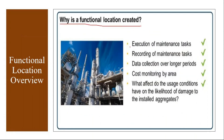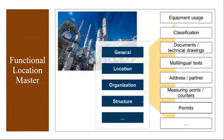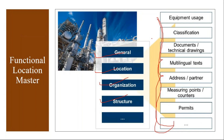Why is a functional location created? For execution and recording of maintenance tasks, data collection over a longer period of time, and cost monitoring by area — for example, to understand what effect usage conditions have on the likelihood of damage to installed aggregates. If you want to monitor anything area-wise, you create that area as a functional location. The data in a functional location is maintained in these sections: general tab, location tab, organization tab, and structure tab. At the functional location level, you maintain only minimum basic information.